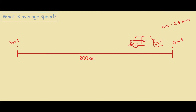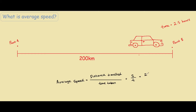So if we were to determine the average speed, we have this formula over here. Normally we denote the distance travelled as S, and the time taken as T. So in this case we would have 200 kilometers over two and a half hours, which gives us an average speed of 80 kilometers per hour.